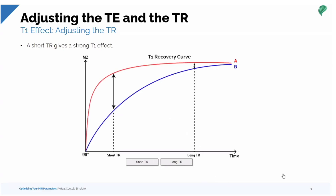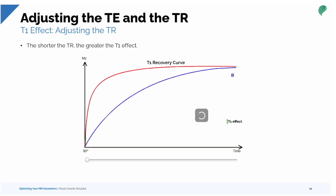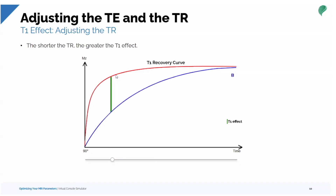A short TR gives a strong T1 effect. The shorter the TR, the greater the T1 effect. At a short TR, there is a great difference in signal intensity between the two tissues. A long TR kind of erases that T1 effect. So short TR preserves tissue contrast in T1 weighting, while long TR diminishes it.